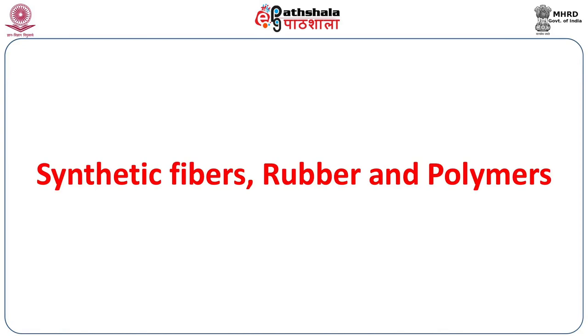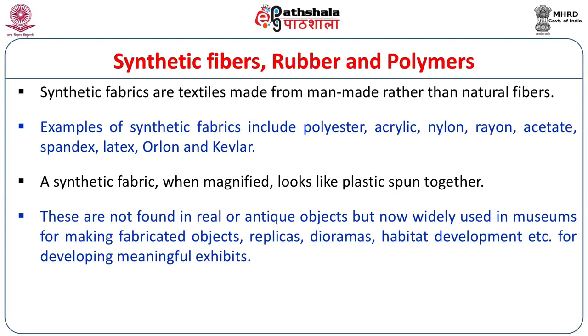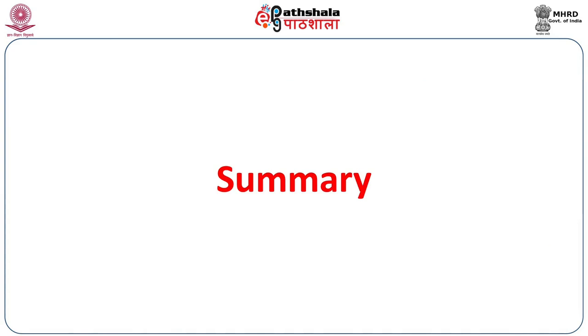Apart from this, many exhibits are developed or created in museums — for example, in natural history museums or science museums. These exhibits are fabricated and prepared from synthetic fiber, polymers like plastics, rubber, etc. These are all man-made exhibits where history, heritage, or culture are visualized or objectified. All the objects are made of synthetic or artificial elements — not found in real or antique objects, but now widely used in museums for making replicas, dioramas, and habitat development to create meaningful exhibits.